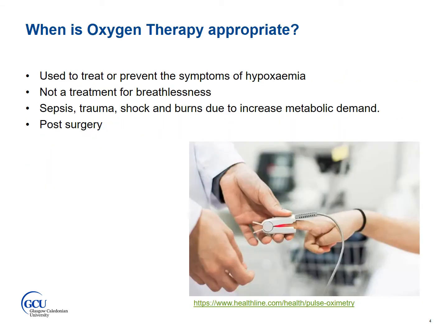Oxygen therapy is used to treat or prevent the symptoms of hypoxemia — that is, when the PO2 is less than 8 — and to prevent tissue hypoxia, that is, when there's not enough oxygen to meet the metabolic demand, which in turn leads to tissue injury or cell death.